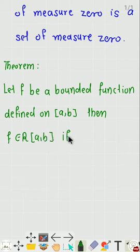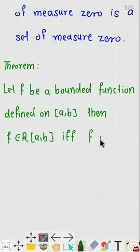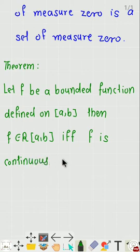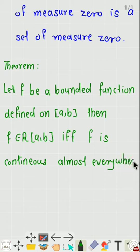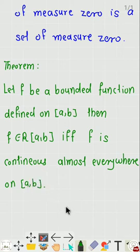...if and only if f is continuous almost everywhere on the closed interval [a, b]. This is the theorem we will use without proof. We use the statement of this theorem to solve the examples.